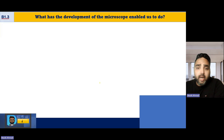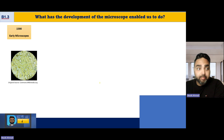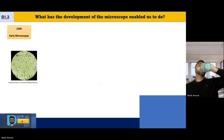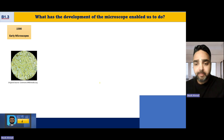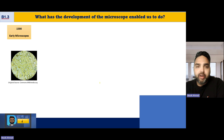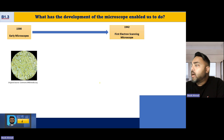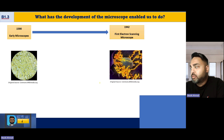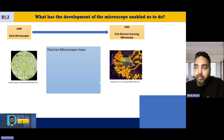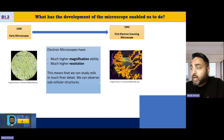The last bit we're going to cover today is the development of microscopes. Early light-based microscopes were created around 1590. Much later, in 1942, the first electron scanning microscope was developed. Electron microscopes have a much higher magnification ability and a much higher resolution, meaning we can study cells in much finer detail and observe sub-cellular structures.